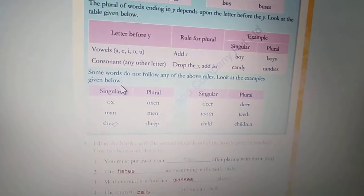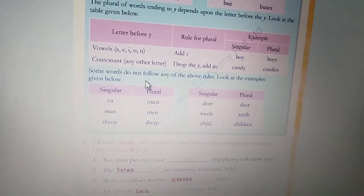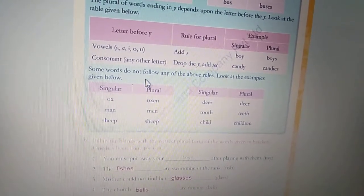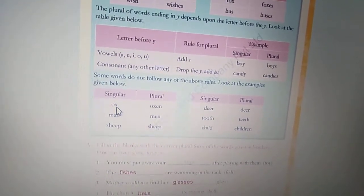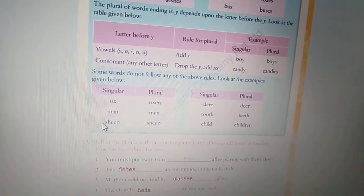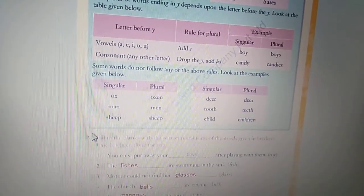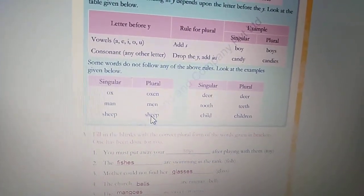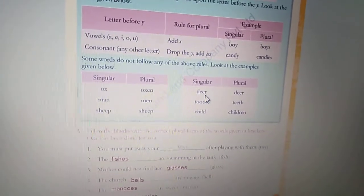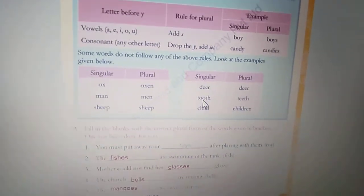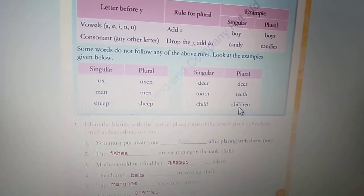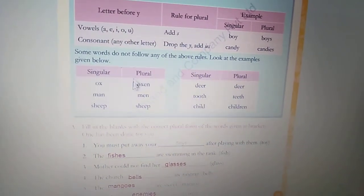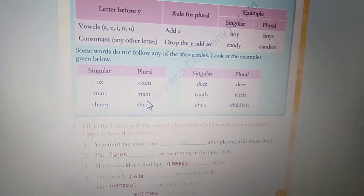There are some words which do not follow any of the above rules. Kuch aise words ho ta hai, jinn mei yeh wale rules naihi lagta hai. Jaisi ox ka plural kya hai, oxen. Man, men. Sheep, sheep ka sheep ho ta hai, same word. Deer ka bhi same ho ta hai, deer. Tooth ka kya ho ta hai, teeth. Child, children. Yeh sare wo wale words hai, jinn mei koi upar wala rule naihi lagta hai.